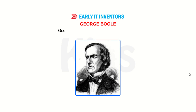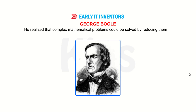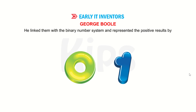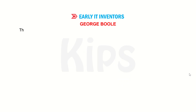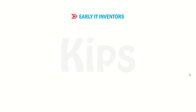George Boole was an English mathematician. He realized that complex mathematical problems could be solved by reducing them to a series of questions having either positive or negative answers. He linked them with the binary number system, representing positive results by 1 and negative ones by 0. This theory of Boolean logic became the fundamental principle for the design of computer circuitry.